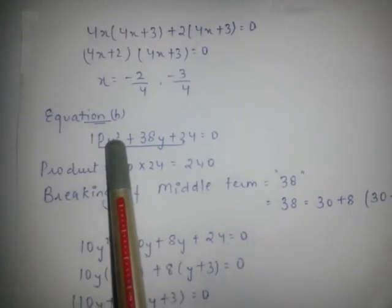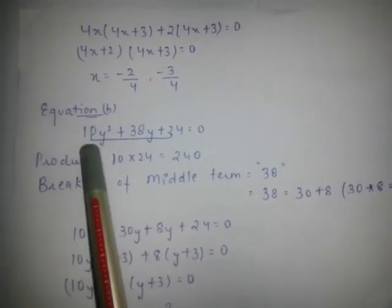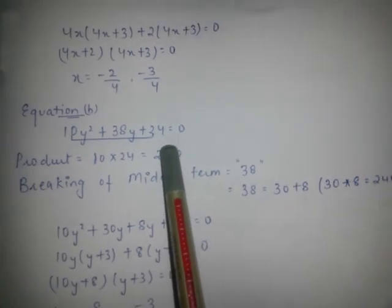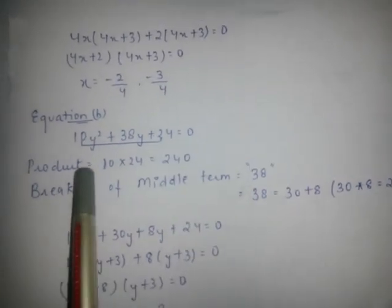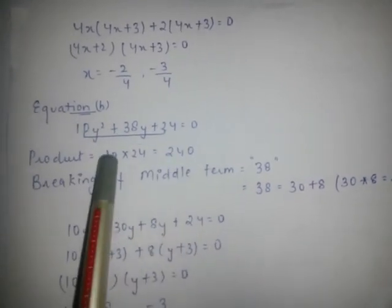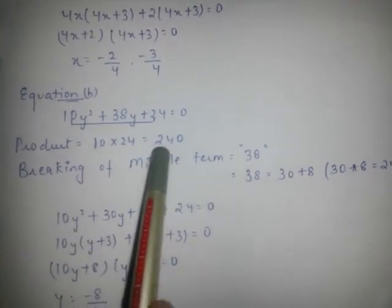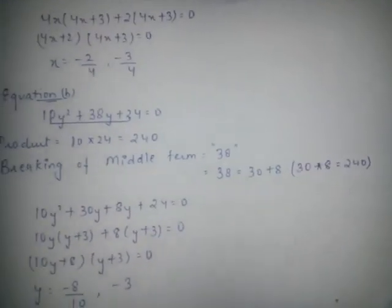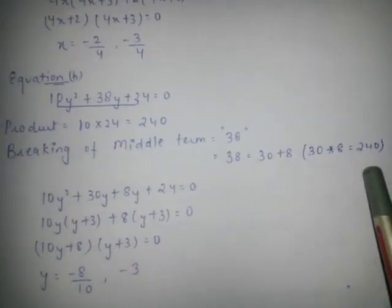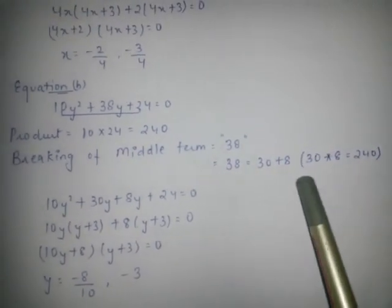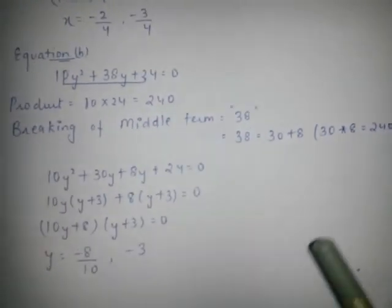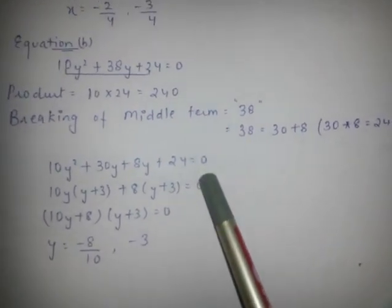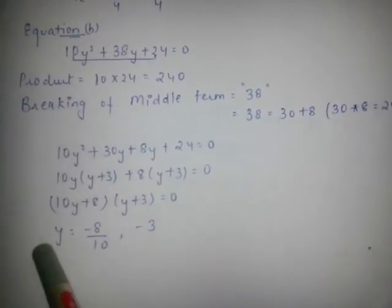Similarly, solve equation B: 10y² + 38y + 24 = 0. The product of A and C is 240. Break 38 into two terms whose product equals 240 — we get 30 and 8. Write the equation in this form and we get the values of y.